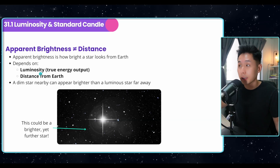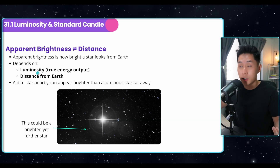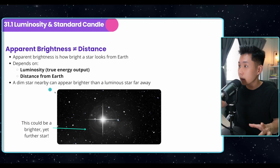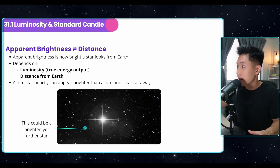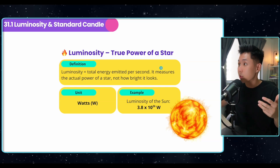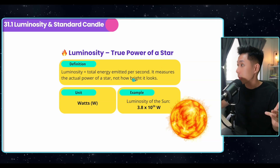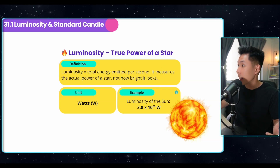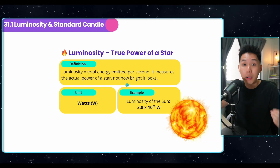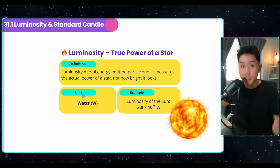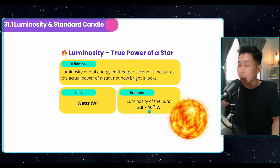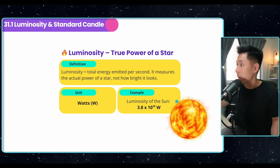Brightness often depends on two things: luminosity and distance from Earth. A dimmed star nearby can appear brighter than a luminous star far away. Luminosity is just the total energy emitted per second by a star — it measures the actual power of a star, not how bright it looks. The unit is in watts. For example, the luminosity of the sun is 3.8 × 10²⁶ watts.